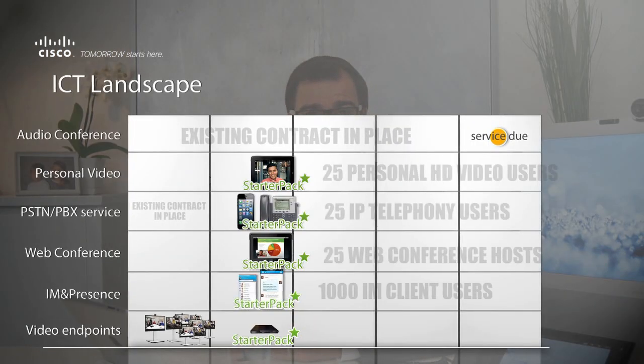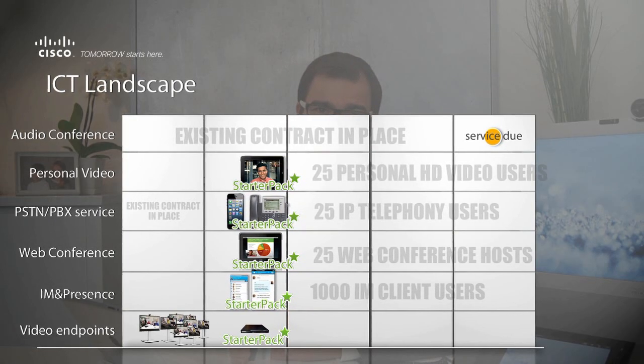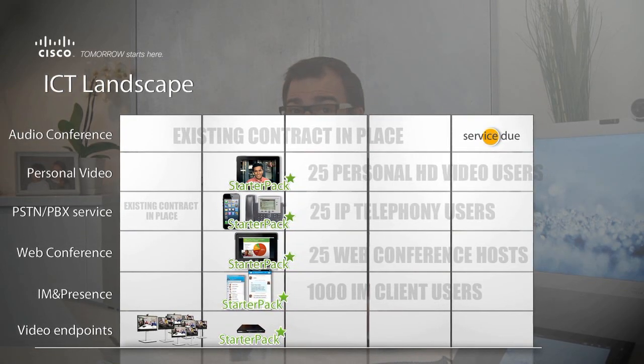The third starter pack offering is around enabling key people within the organization with true unified communications features. Anyone deploying a BE6K has the right to add 25 feature-rich licenses at an extremely affordable starter pack price. These 25 users will be able to get IP telephony on a soft phone, mobile phone, desktop phone, or all of these. In addition, they will get HD video on a soft phone or on a personal video endpoint, and HD video quality web conferencing with included free voice over IP.